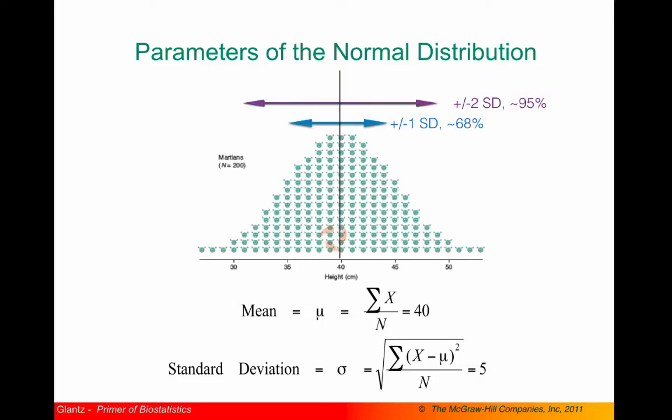Likewise, approximately 95% of observed values in the distribution will be found between two standard deviations below the mean and two standard deviations above the mean. Finally, approximately 99% of observations are found between three standard deviations below the mean and three standard deviations above the mean.